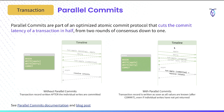With parallel commits, we still write Apple and Barry in parallel, but we are also able to write the transaction record immediately, even before those two operations return. We write it with a status of staging — a special value that says if everything goes through successfully, we can consider this committed — and then return directly back to the client. Asynchronously, we update that transaction record to committed and resolve the intents. Parallel commits is one of many optimizations that allow CockroachDB to do a lot of work in parallel.